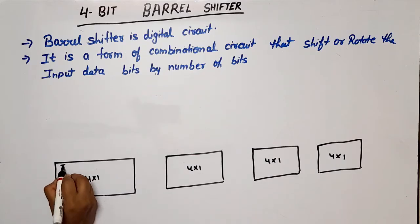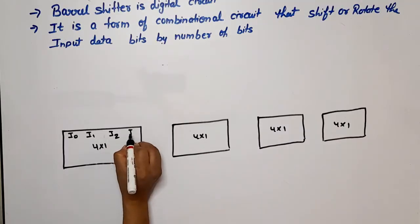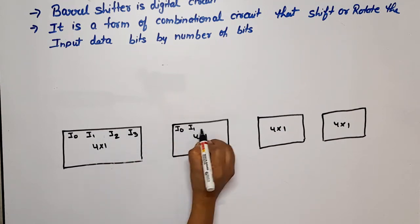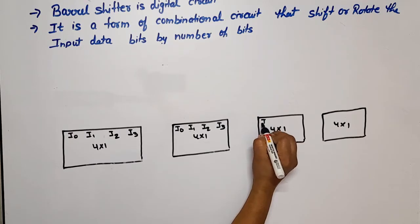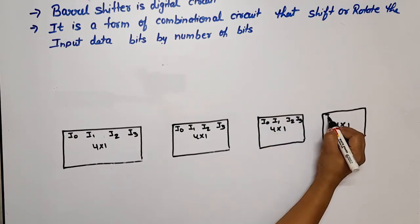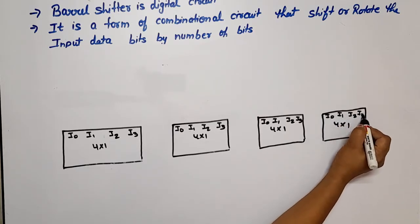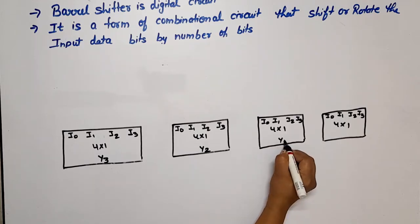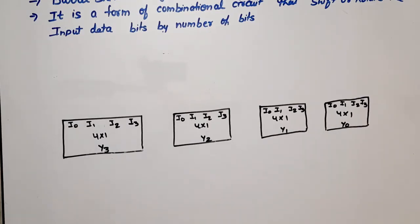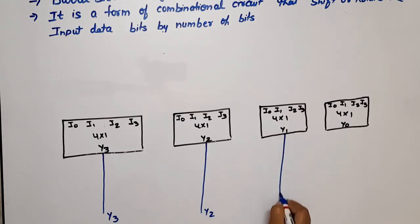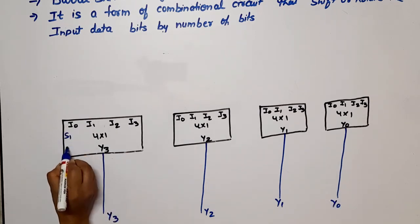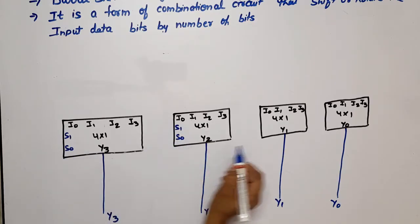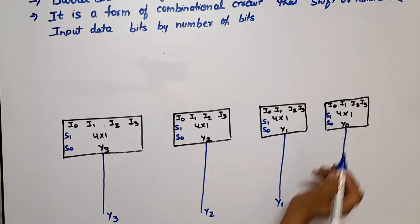Each 4-to-1 MUX has four inputs: I0, I1, I2, I3. The outputs are Y3, Y2, Y1, Y0. Since these are 4-to-1 multiplexers, the number of selection lines is 2 — S1 and S0 — and these selection lines are common to all four multiplexers.